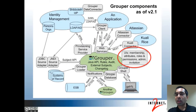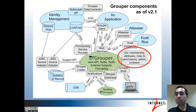This is the architecture diagram for Grouper as of version 2.1. The block that is circled is the UI component. As you can see, the UI is one of many components included in Grouper that talk to Grouper using Grouper's Java API.